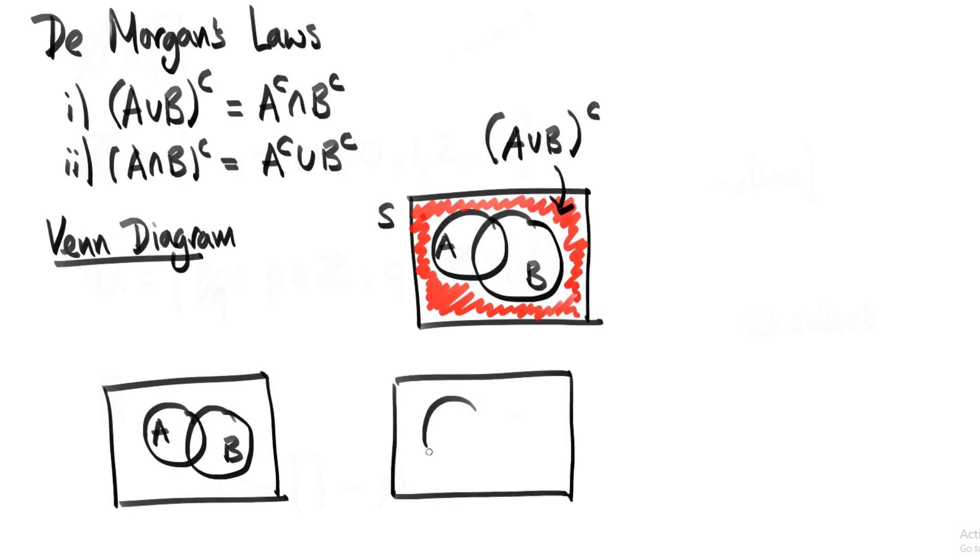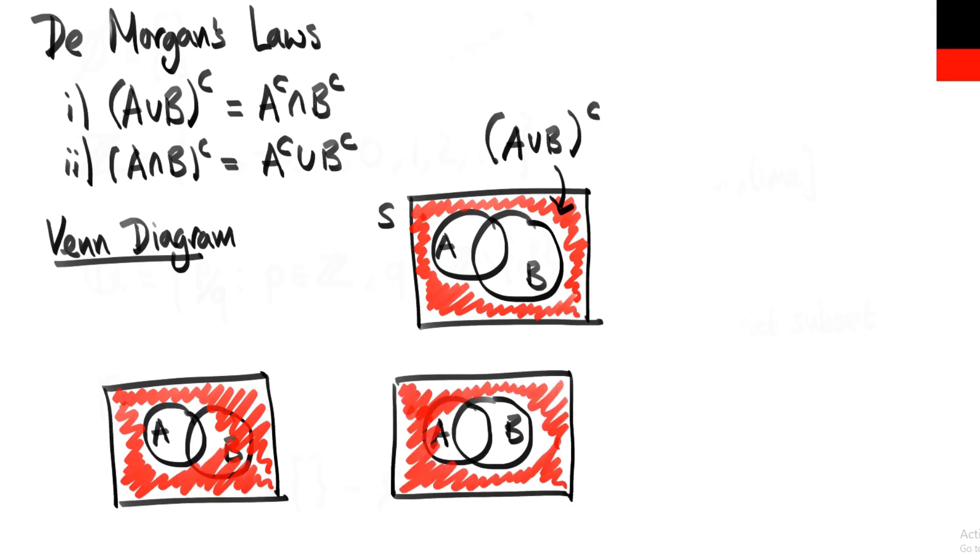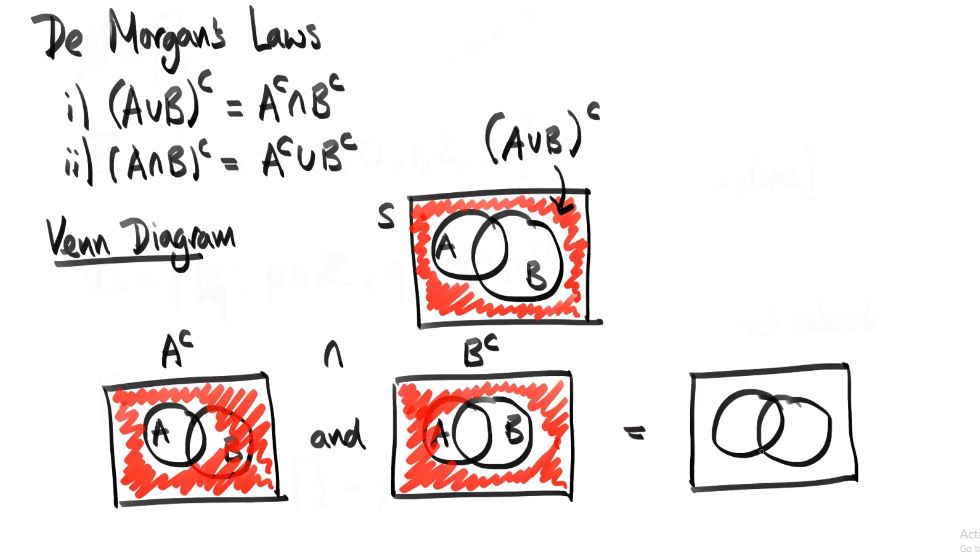And what about the right hand side? Well, A complement is just everything that's not in A. B complement is everything that's not in B. And the intersection of A complement and B complement means those elements that are in A complement and in B complement. In other words, the area that is shaded red in both the left and the right diagram.